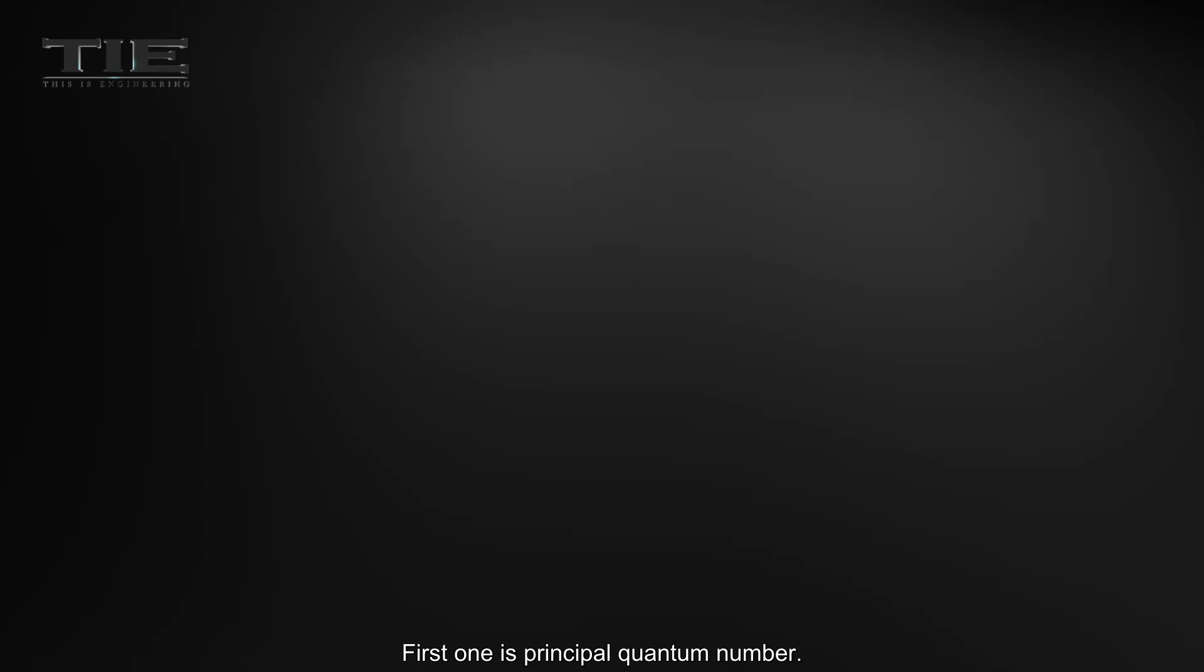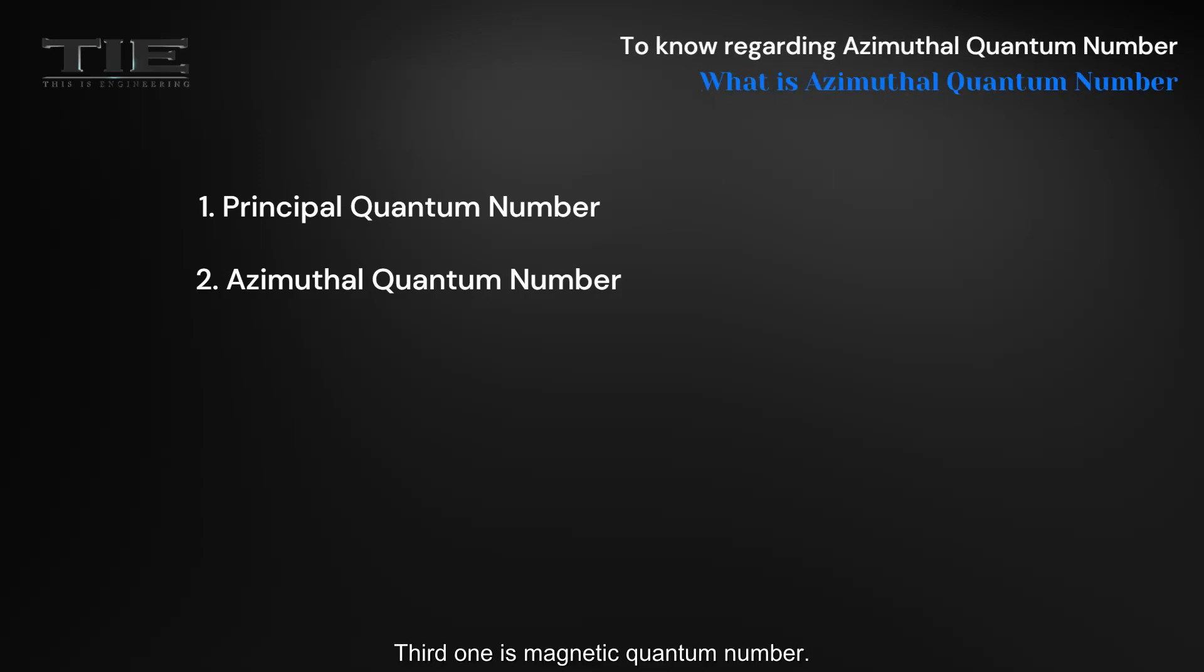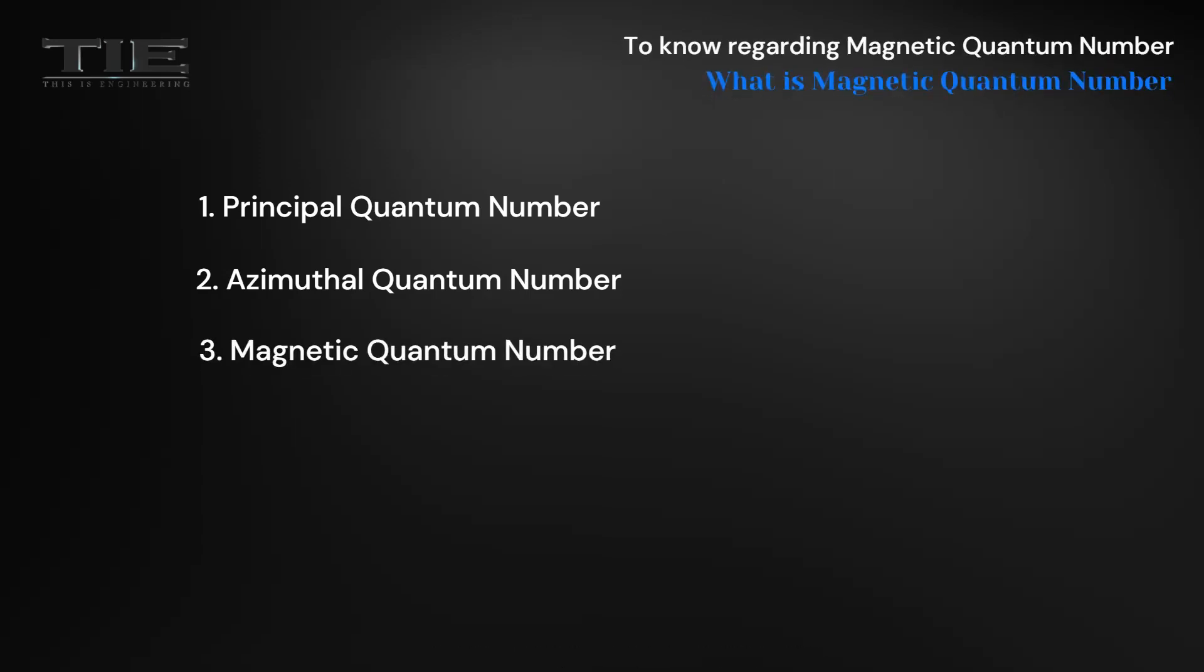First one is principal quantum number. Second one is azimuthal quantum number. Third one is magnetic quantum number. And the fourth one is spin quantum number.